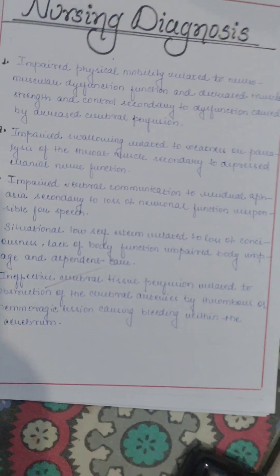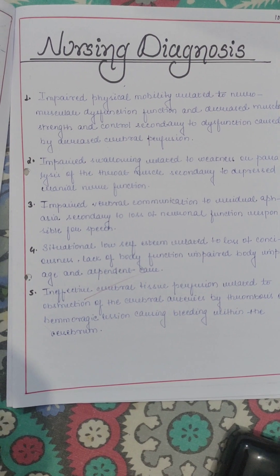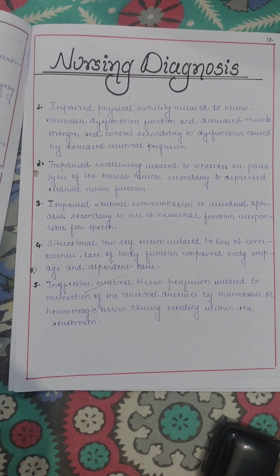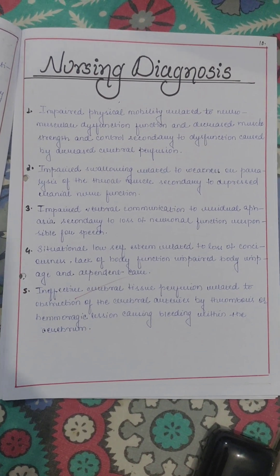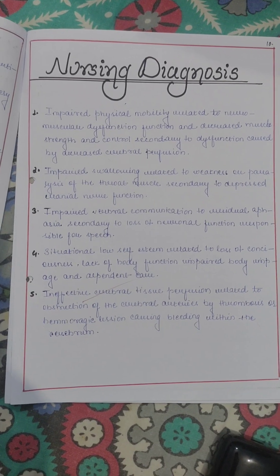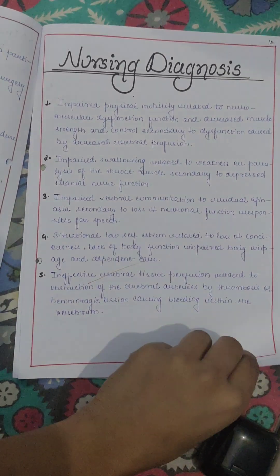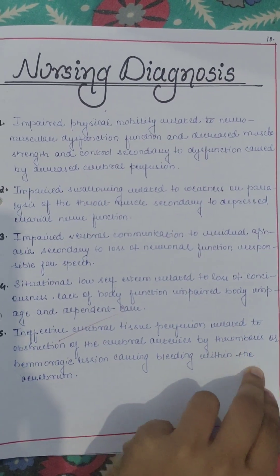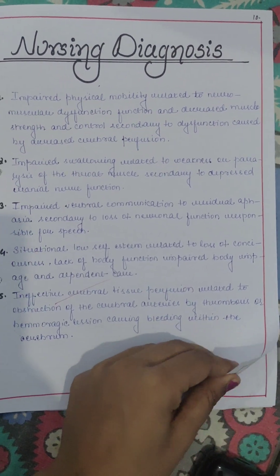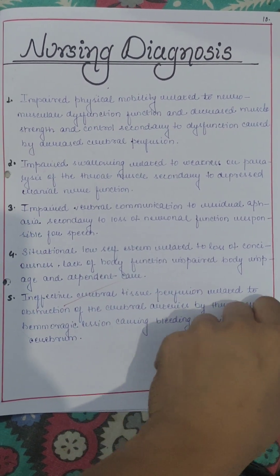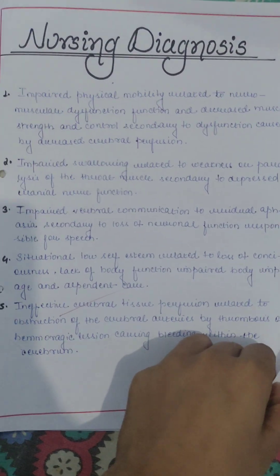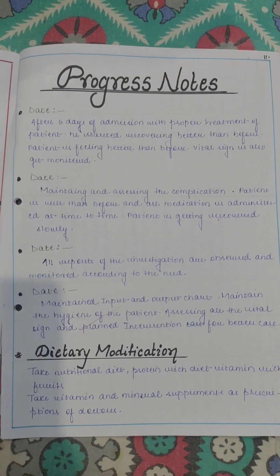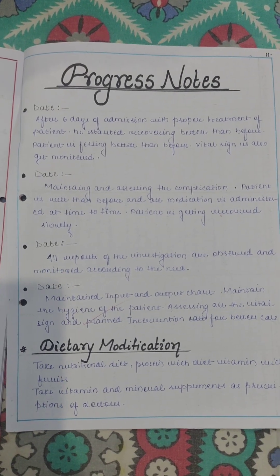This is the nursing diagnosis section. You can add more diagnoses and plan many interventions accordingly. After that, you will prepare a progress note — what the progress notes are according to the dates, and for how many days you have given care.